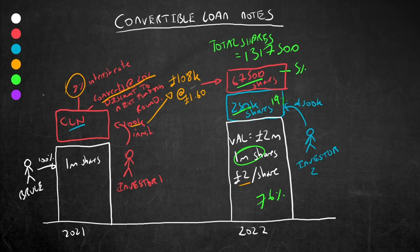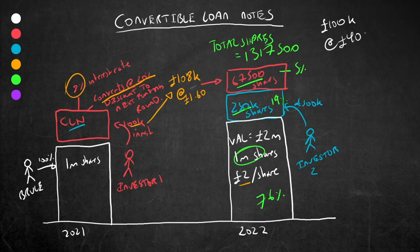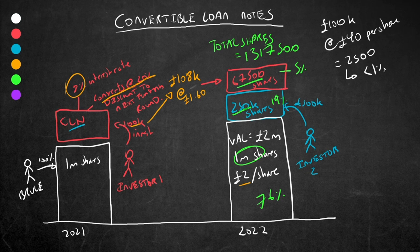Okay, so imagine if a business scaled really, really fast, and it was worth 50 million by 2022, as opposed to 2 million by 2022. The original investor's 100,000 would be worth, at a discounted price of 40 pounds a share, 2,500 shares, which is essentially less than 1% of the company. Does this compensate the investor for the risk they took at investing at an early stage? Probably not. So the loan note may specify a max valuation cap of say 5 million pounds.